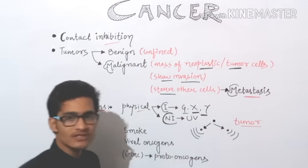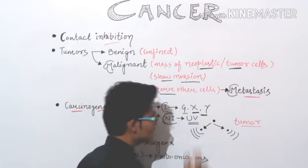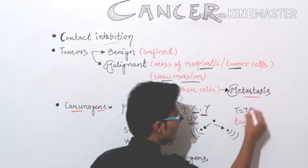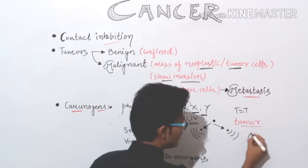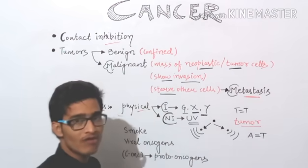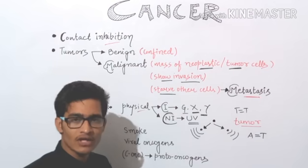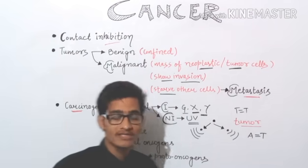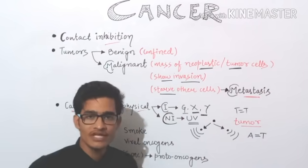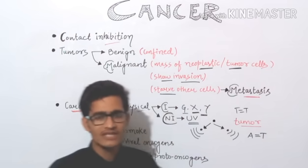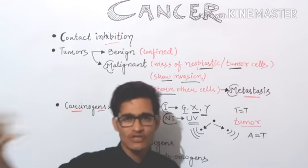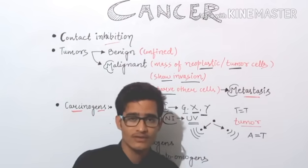For example, UV radiation causes thymine dimer formation. We know that adenine pairs to thymine with a double hydrogen bond, but in some cases thymine dimer is found — that is a very important mutation which is corrected by DNA repair mechanisms. UV radiation causes non-ionizing mutations in our DNA that lead to different kinds of abnormalities, probably including cancer.